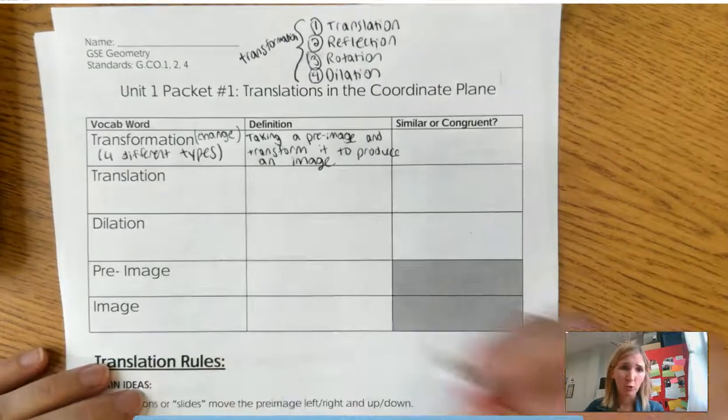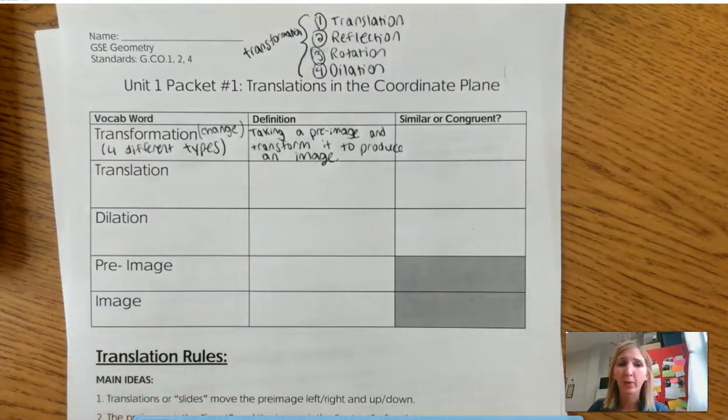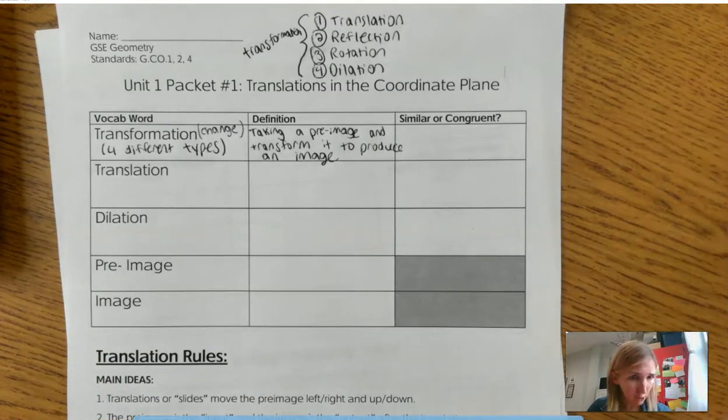So what I want you to do is just think change. Transformation is changing a pre-image into an image. Now we'll talk about pre-image and image right now. One of them means before and the other means after. What do you think means before? Pre-image or image?